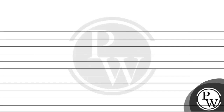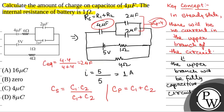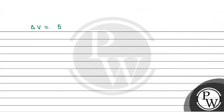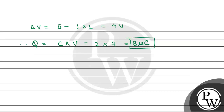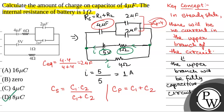Now we will calculate the charge. Before that, we calculate delta V — the potential drop across the capacitor. With current I flowing, the potential drop across the two points equals E minus I times R, where R is 1 ohm. So that is 5 minus 1 times 1, which equals 4 volt. Therefore, charge Q equals C times delta V, which is 2 microfarad multiplied by 4 volt, that is 8 microcoulombs. This is the charge on the capacitor plate — 8 microcoulombs — which is option D, the correct option.